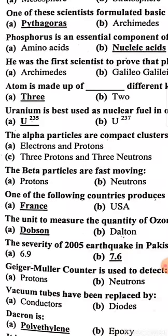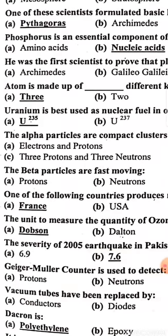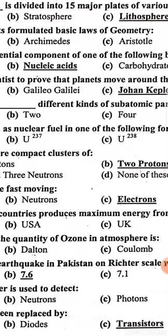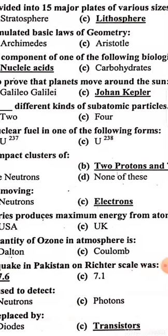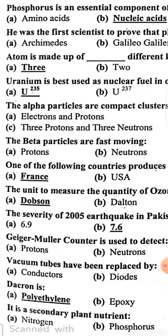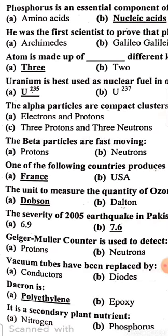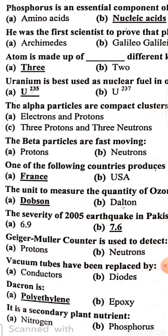An atom is made of three different kinds of sub-atomic particles: electron, proton, and neutron. Recently, about 50 more particles have also been discovered.